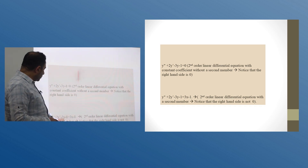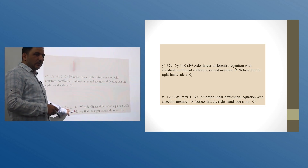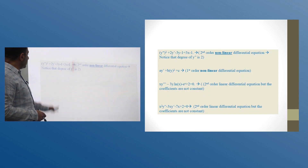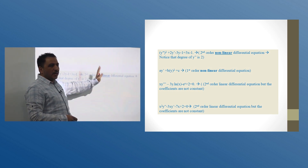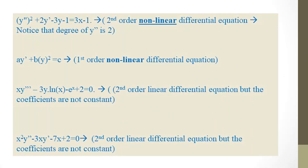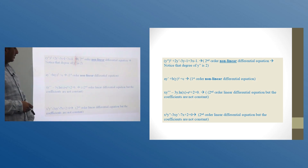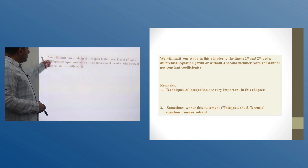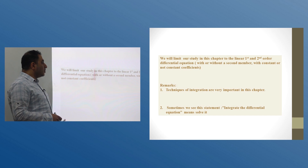The third kind is y'' + 2y' - 3y = 3x - 1. The difference from the previous is the existence of the function 3x - 1 on the right-hand side. We will deal with that type but not at the beginning of the chapter. There are also nonlinear equations — for example, y'' squared + y' is nonlinear — and equations where the coefficients are not constant. We are going to limit our study in this chapter to the first and second order linear differential equations, with or without a second member.